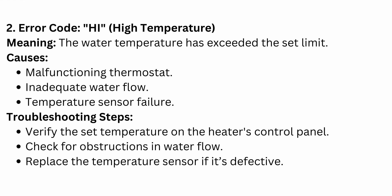Another code is HI, which stands for High Temperature — the water temperature has exceeded the set limit. Causes can be a malfunctioning thermostat, inadequate water flow, or temperature sensor failure. To troubleshoot: verify the set temperature on the heater control panel, check for obstructions in water flow, and replace the temperature sensor if it is defective.